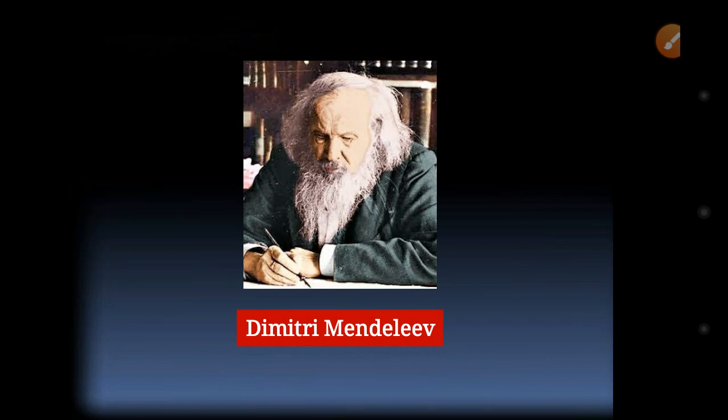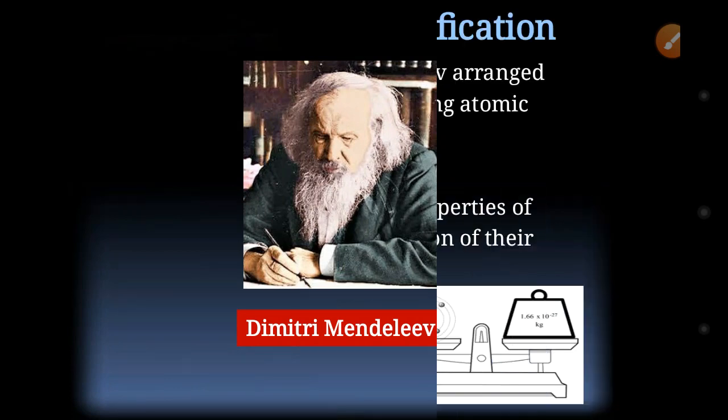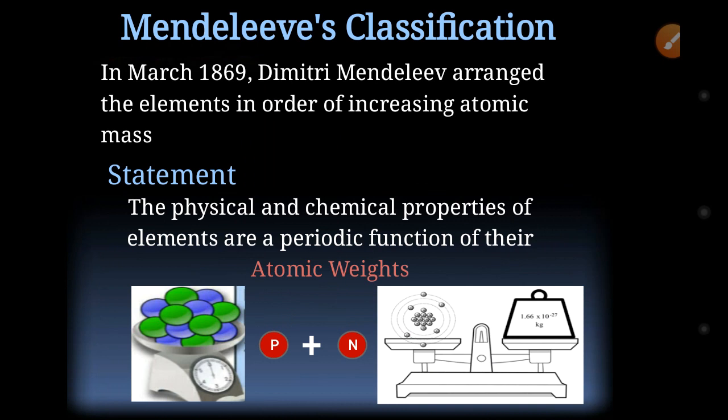In 1869, Mendeleev presented his periodic law. He also arranged elements according to increasing atomic masses. His law states: the physical and chemical properties of elements are the periodic function of their atomic weights.